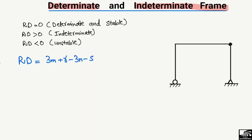We can define determinancy by three criteria based on the redundancy Rd. If Rd equals zero, the frame is determinate and stable. If Rd is greater than zero, it is an indeterminate frame. If Rd is less than zero, it is an unstable frame structure. There is a formula to find this redundancy.